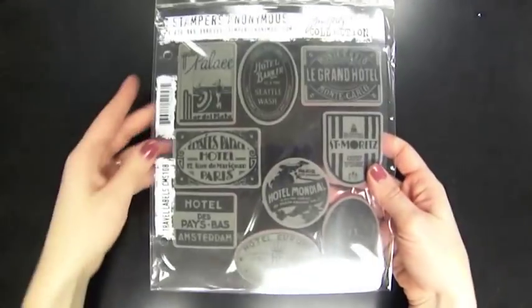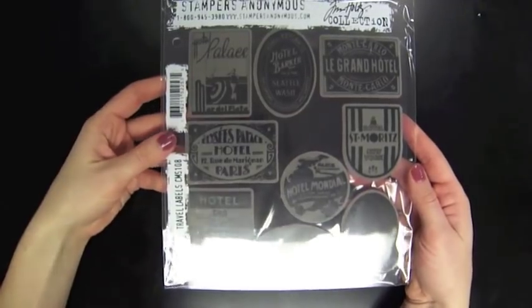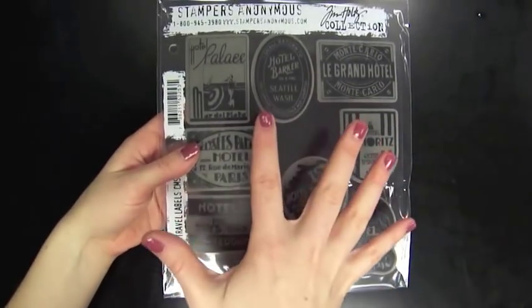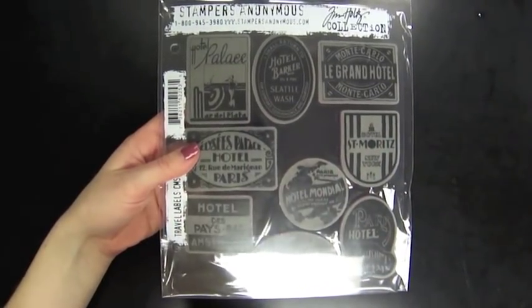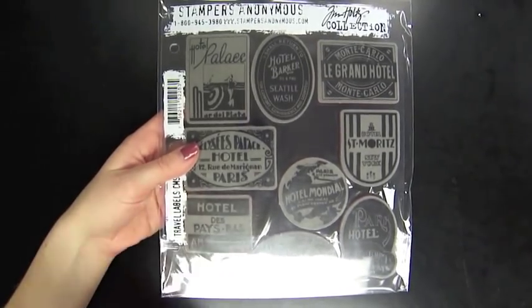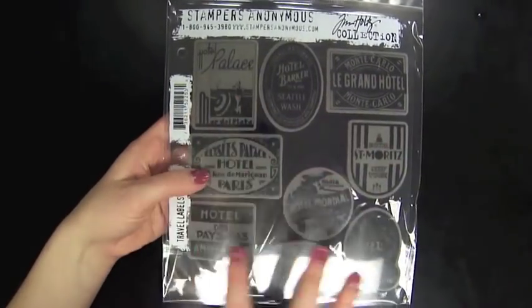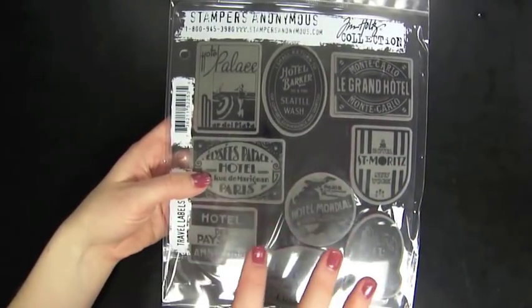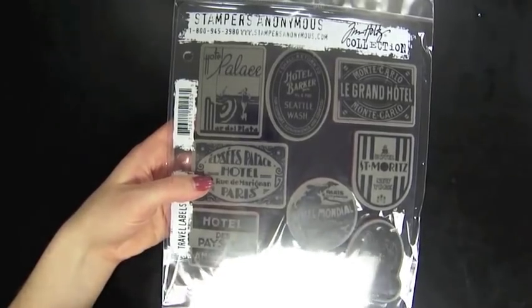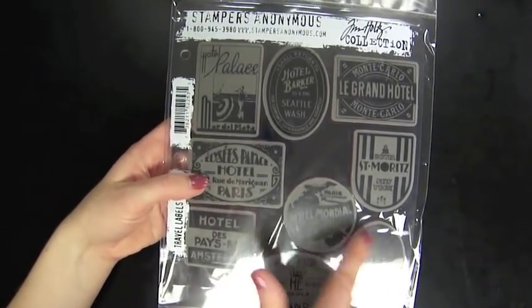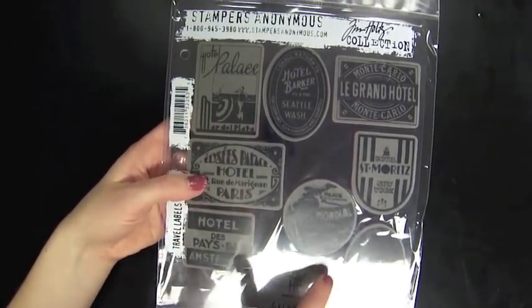There's also these stamps from Stamper's Anonymous and Tim Holtz. This is a set. A lot of times he'll offer the stamps in woodblock or rubber cling stamps but then you can get them as a set. This one has all kinds of different labels and icons having to do with travel. Kind of globe there, different hotel and destination kind of signs.